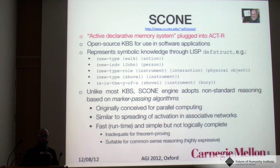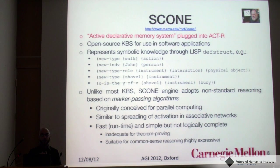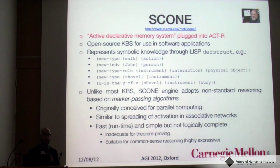SCONE is a knowledge-based system based on LISP, and in terms of ACT-R it can be seen as an active declarative memory system plugged into it. Unlike most knowledge-based systems, SCONE's reasoner adopts non-standard reasoning techniques — in particular, marker-passing algorithms that can be seen as a kind of parallel computing, similar to spreading of activation in ACT-R. For this reason, the two systems fit well together.